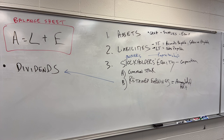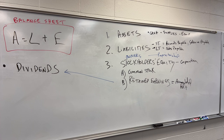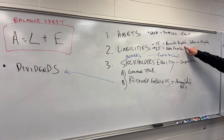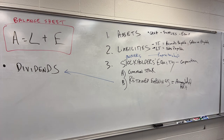The difference between accounts payable, salaries payable, and notes payable is who is owed the money. Notes payable is owed to a bank and usually due more than a year from now. Salaries payable is owed to employees. Accounts payable is owed to a supplier. They're all IOUs — they all represent money we owe — but they differ based on who is owed.